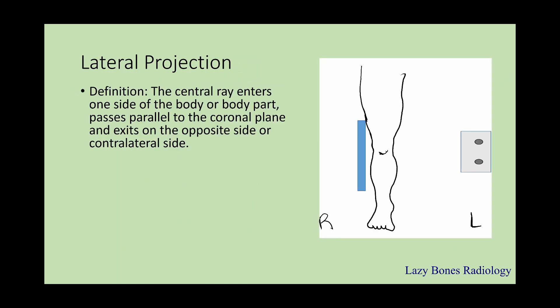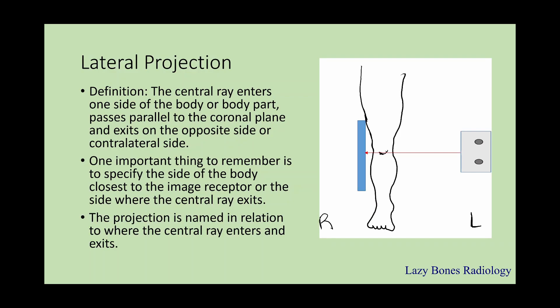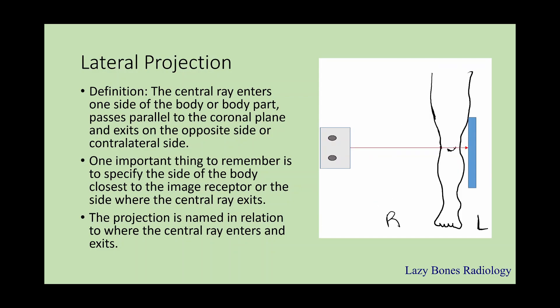Lateral projection. This is when the central ray enters one side of the body or body part and passes parallel to the coronal plane and exits on the opposite side or the contralateral side. One important thing to remember is to specify the body part that's closest to the image receptor or the side where the central ray exits. The central ray enters through the left or medial side and exits through the lateral side. The projection is named in relation to where the central ray enters. This is known as a medial-lateral projection, and the opposite — lateral to medial — is known as a lateral-medial projection.